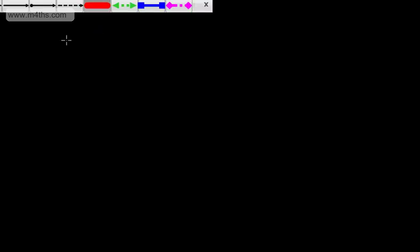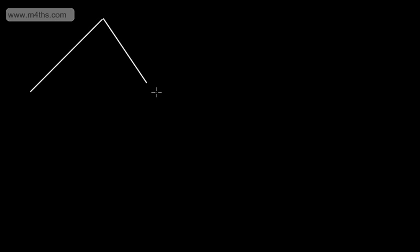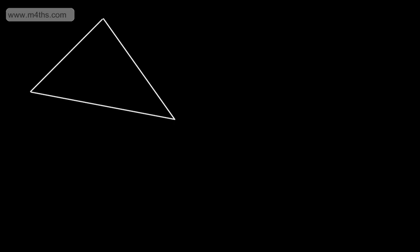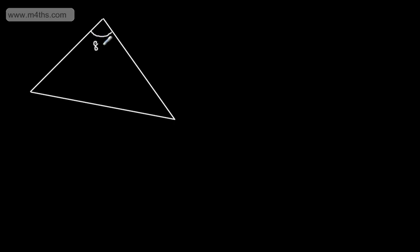Let's start off by finding a missing length in a non-right-angled triangle. The first scenario we're going to look at is where we have a known angle and two known sides. Let's say that this angle right here is going to be 80 degrees — we have what's called an enclosed angle — and the two sides are 7 and 9. So if we have an enclosed angle and two known sides and we want to find the third side, we would use the cosine rule.